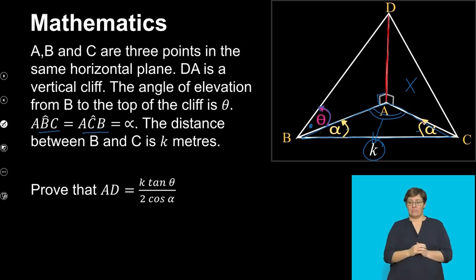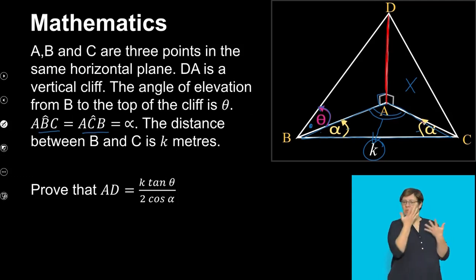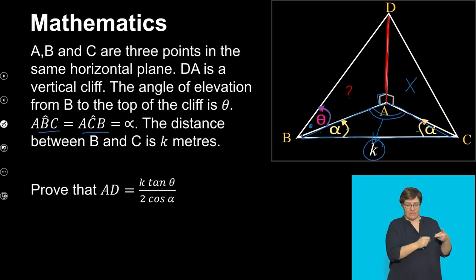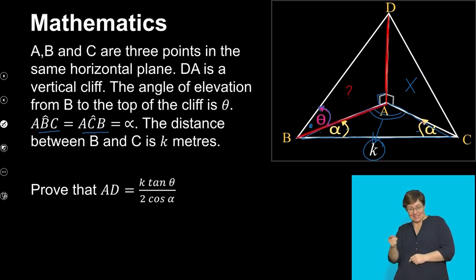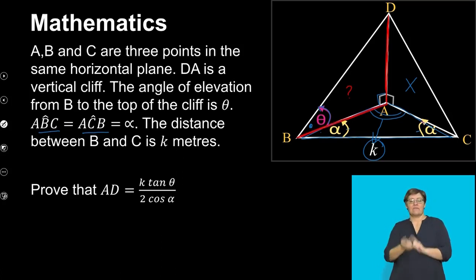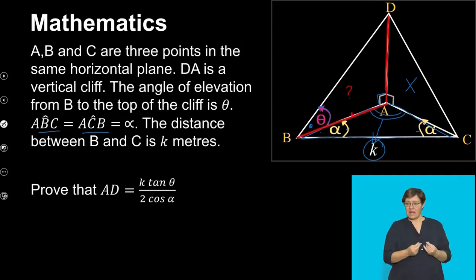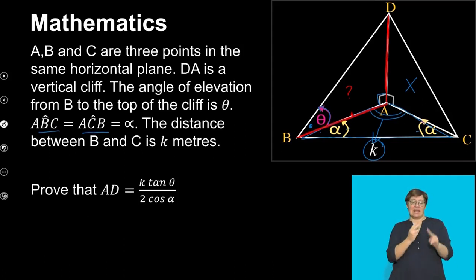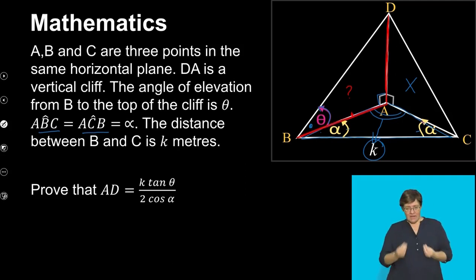They want us to find AD. AD belongs to triangle ABD, but in that triangle we only have one piece of information, so we're missing a second piece. If I can find AB using the horizontal triangle BAC, then I'll have AB and θ, and I can rewrite AD in terms of θ, α, and k. So we have a strategy — let's start putting that into action.